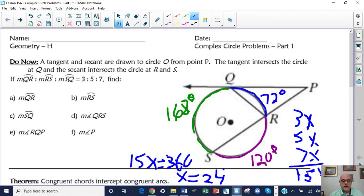So now let's go through part A. QR, that's 72 degrees. RS, that's your 120. SQ is 168.